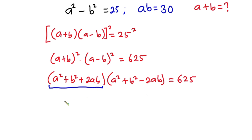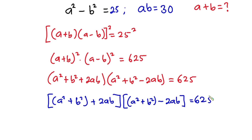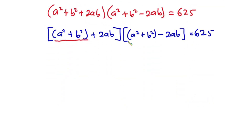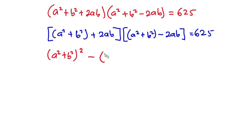Now let's pay attention to this whole thing. Let's have a² + b² represent one term. We can see we have (a² + b² + 2ab) times (a² + b² - 2ab). We have the exact same expression a² + b² in both, and we have +2ab and -2ab, so this whole thing is a difference of two squares. We can write it as (a² + b²) all squared minus (2ab) all squared, and this is equal to 625.